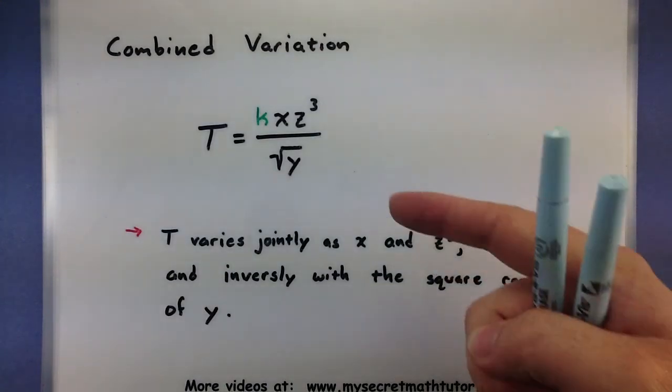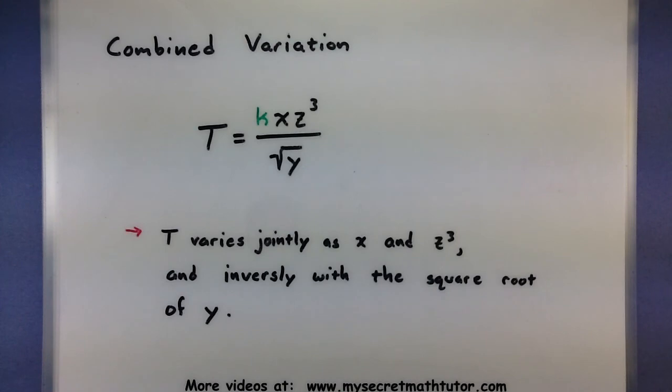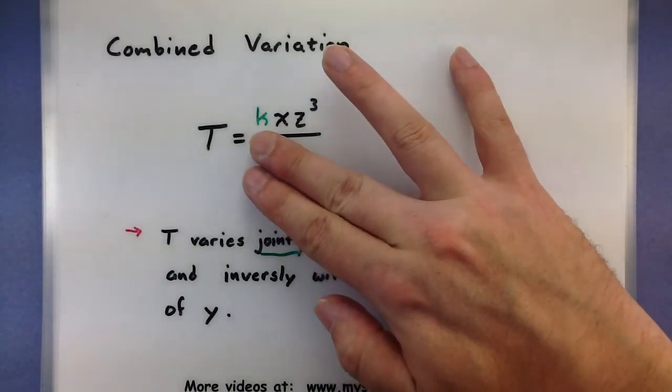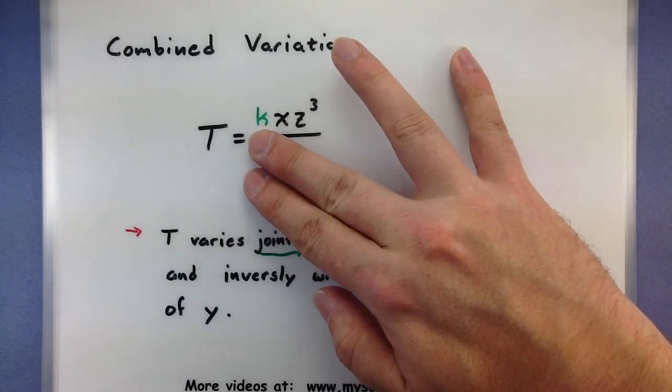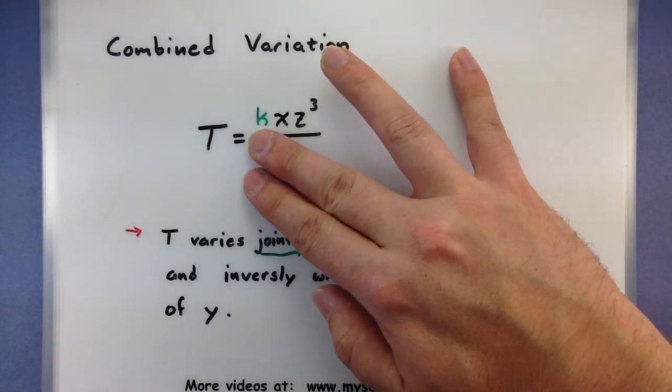So here's how we would say this type of variation here. We would say that T varies jointly as x and z cubed. So what's going on there? Well, look at the top part of this fraction and notice how it looks like our joint variation. You just have the x and the z cubed.